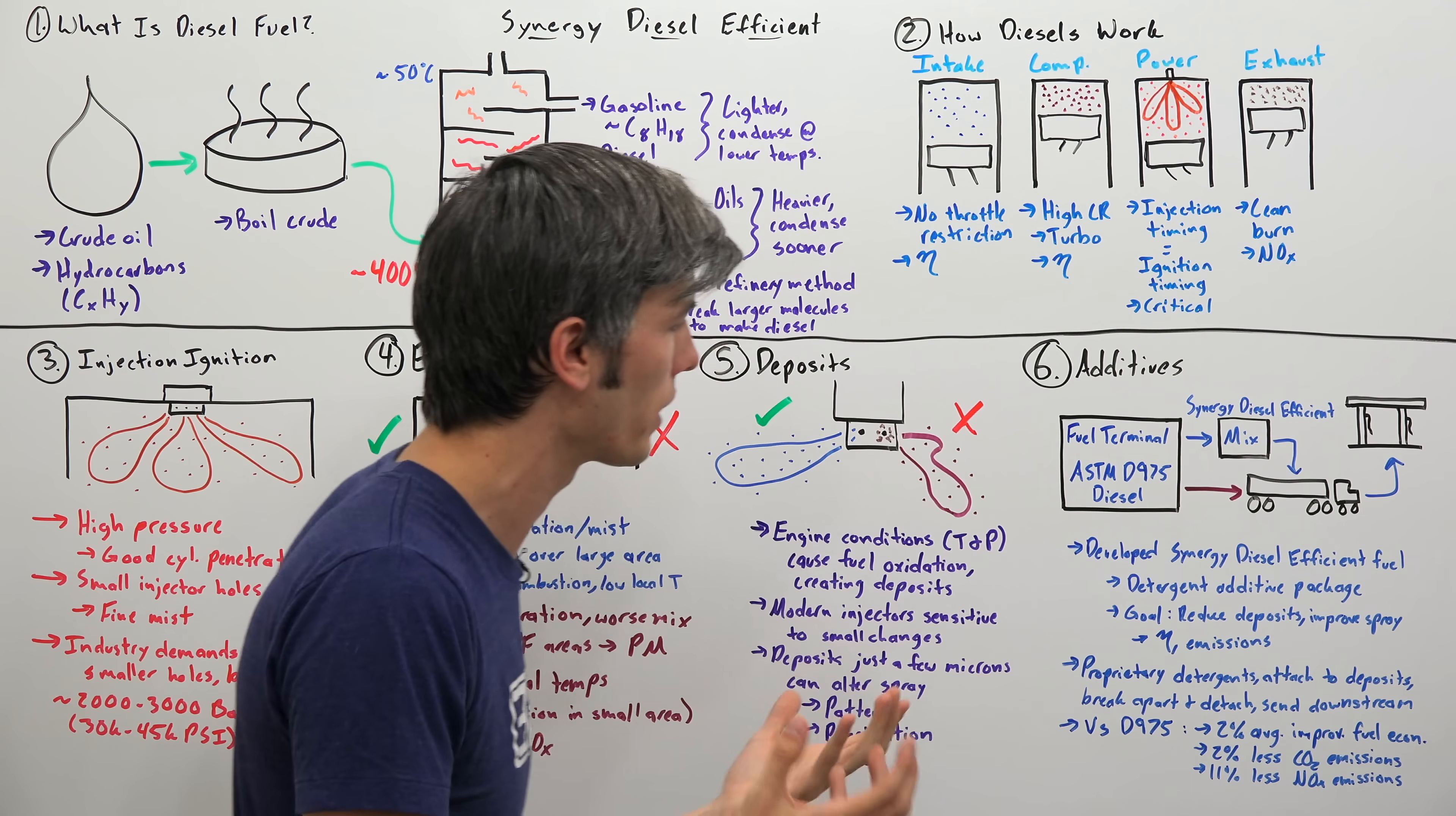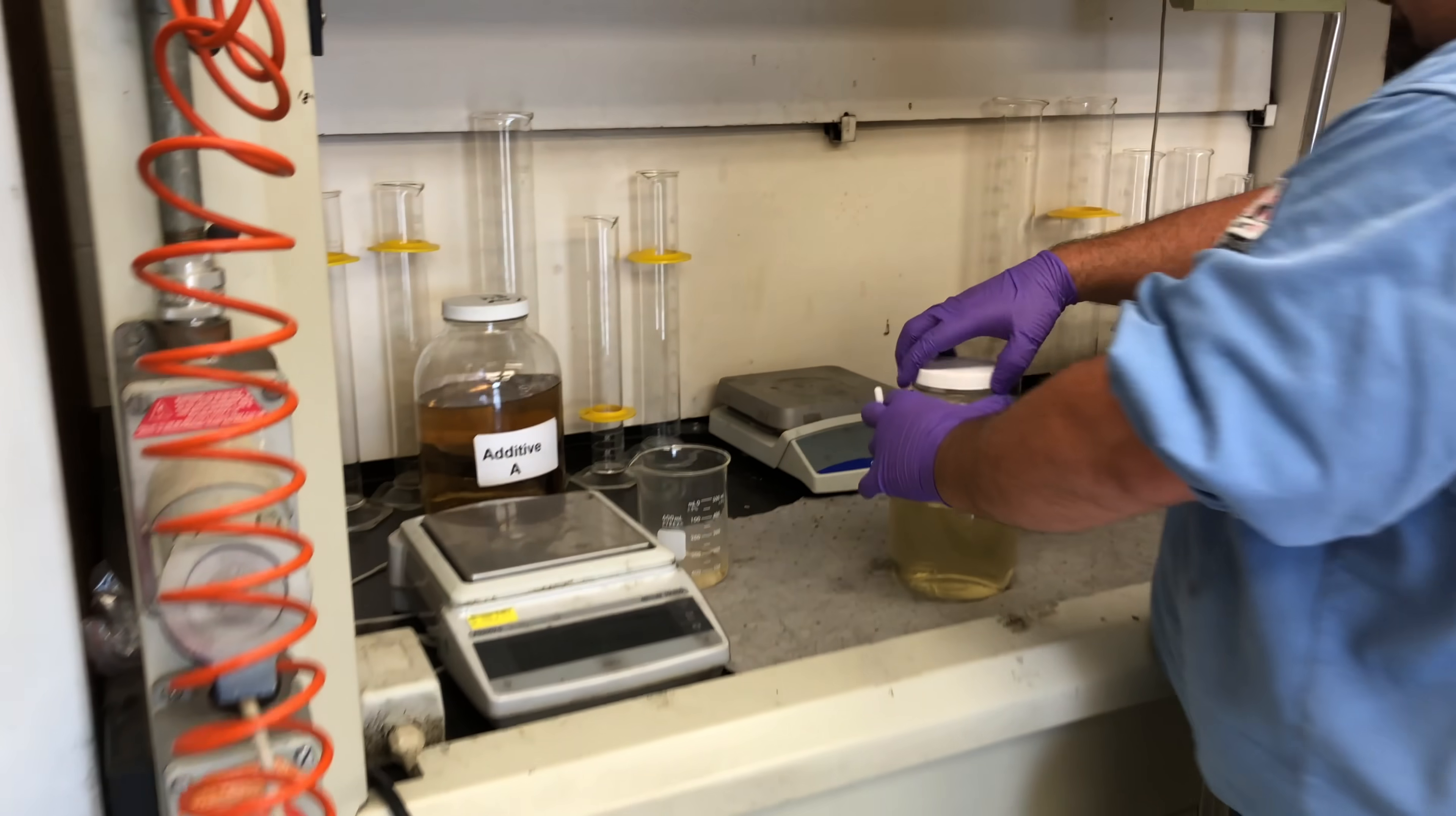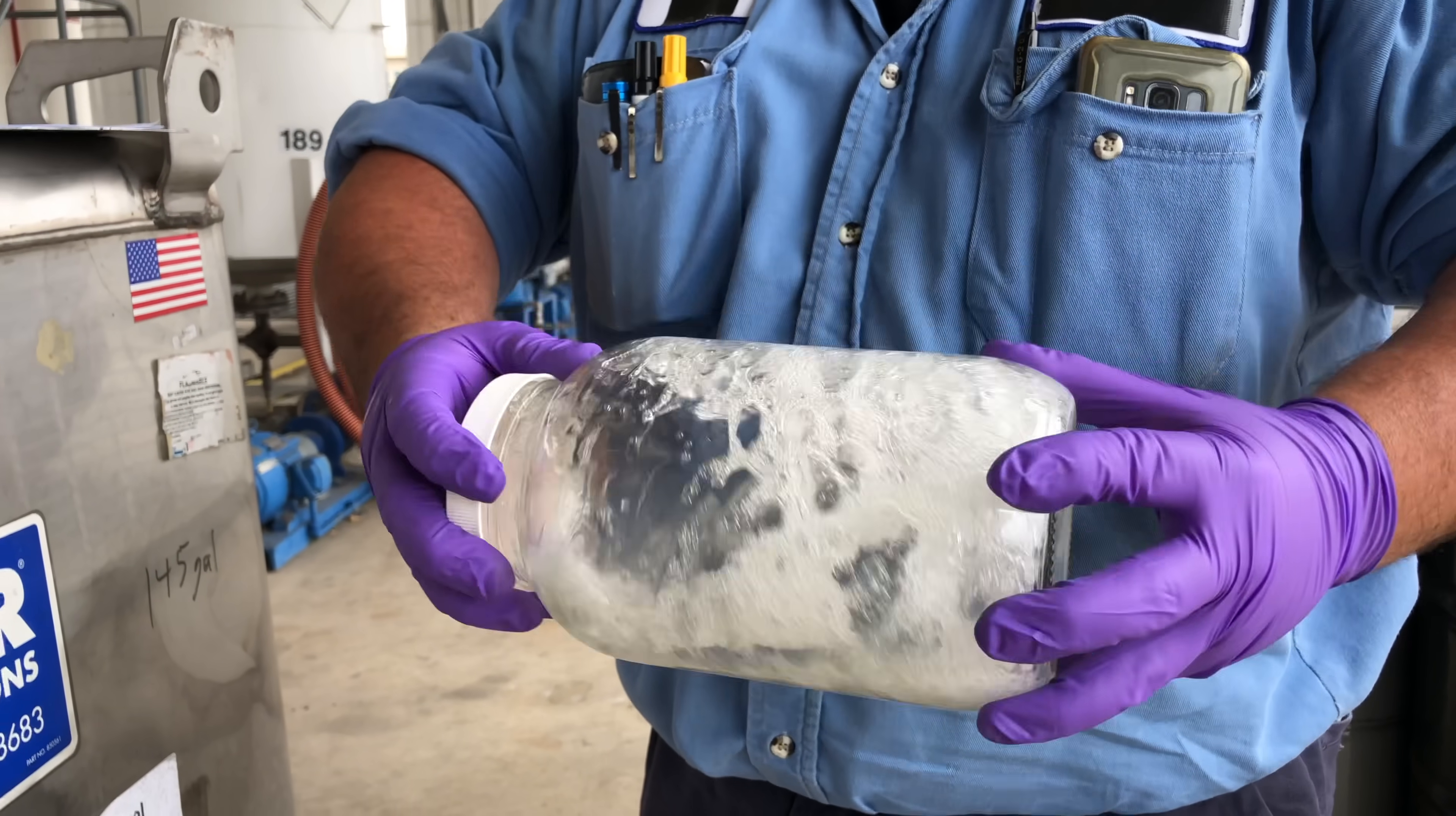And so ultimately what ExxonMobil's goal is with this detergent additive package, is that it will reduce deposits, which will improve the spray quality of those injectors, and thus improve emissions and improve efficiency. Now the additive package that they're using is of course proprietary. So we don't know what the chemical formula is of these detergents used. But the whole idea behind detergents is that they'll attach to the deposits, break them apart, and then send them all downstream from the engine. And so we can ask the question, does their additive package actually work? And so the results that they were able to obtain through testing was a 2% average improvement in fuel economy, a 2% reduction in CO2 emissions, and an 11% reduction in NOx emissions.